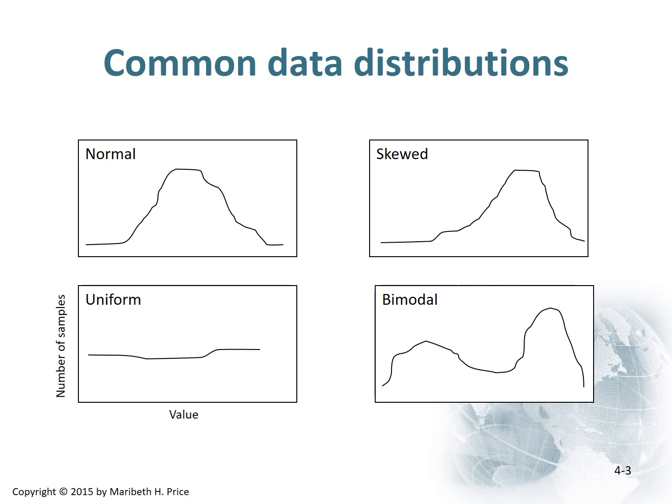Normal distribution has most things in the middle near the mean. Skewed means shifted one way or the other. Uniform means not a lot of variability. Bimodal means you have these two high points. Those are the common distributions that you see.